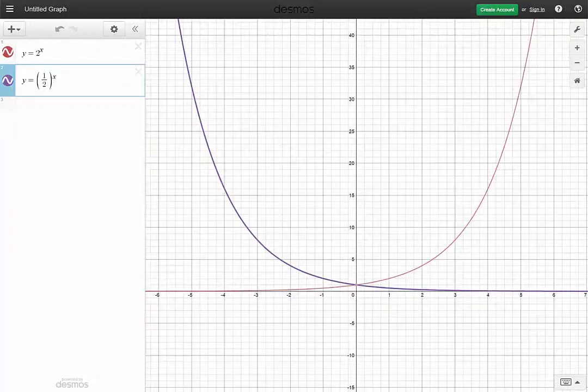As you move along, the red one is 2 to the fifth power, that's 32. So when x is 5, y is 32. And the purple one, when x is 5, y is 1 over 32.